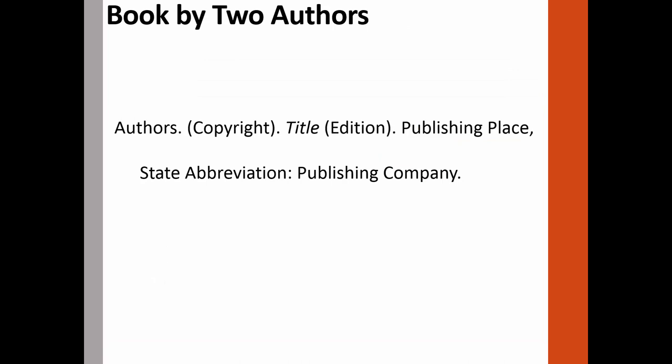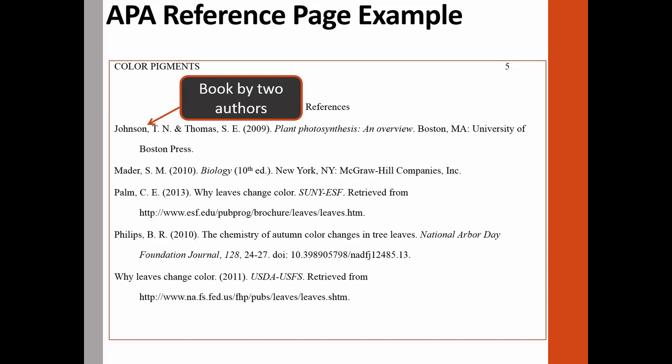Now we have a book with more than one author. To create a reference citation for a source with more than one author, begin with the last name of the first author listed, then list the author's first and middle initials. Then add the second author using the same format; however, separate the two authors with a comma and an ampersand. The rest of the information follows the same format as a book with one author. In the example, the citation begins with the last name of the first author, the two authors' names are separated by a comma and an ampersand, followed by the copyright date in parentheses and a period. The title is italicized with only the first word of the title and subtitle capitalized. Finally, the publication location, a colon, and the publisher finish the citation.